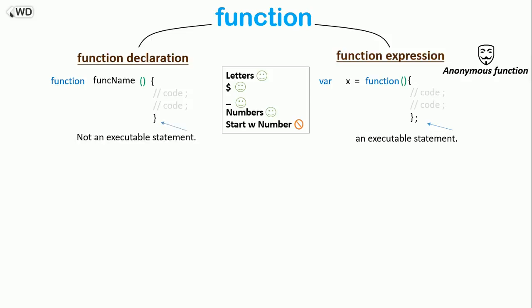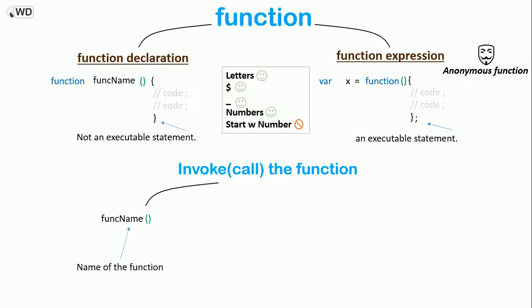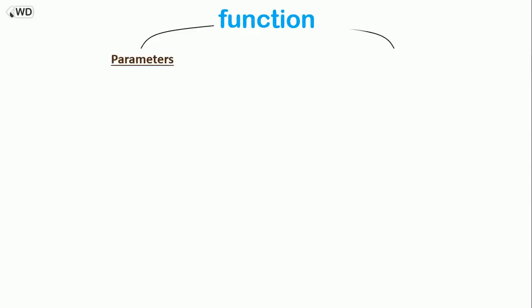To invoke or call the function declaration, type the function name, then parentheses, then a semicolon. To call the function expression, type the variable name, then parentheses, and then a semicolon.